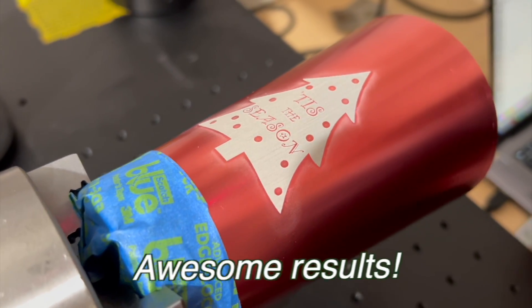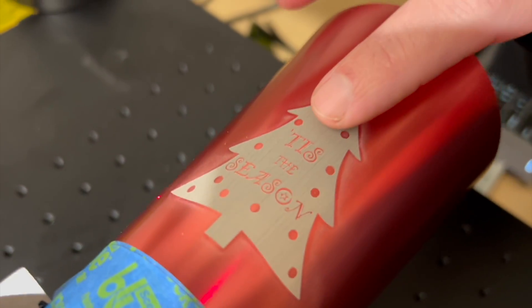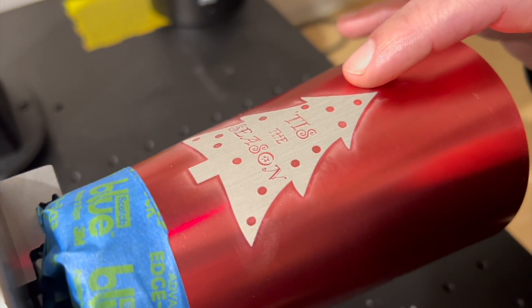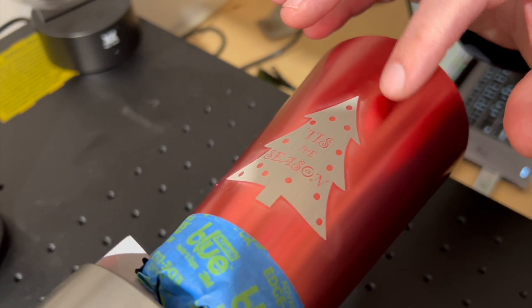Alright, so we got some awesome results. This is exactly what I was looking for. And you can see all the fine details in the text there. And there's really not as much skewing as I would have thought with this being so trapezoidal-shaped. But let's get this out of the machine and cleaned up.